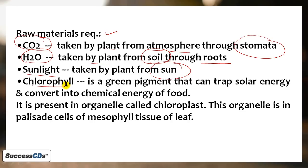First we need to know, what is chlorophyll? Chlorophyll is a green colored pigment which can trap solar energy and convert it into chemical energy of food. Now chlorophyll is present in an organelle called chloroplast. Where is this chloroplast present in plant? Let's see.